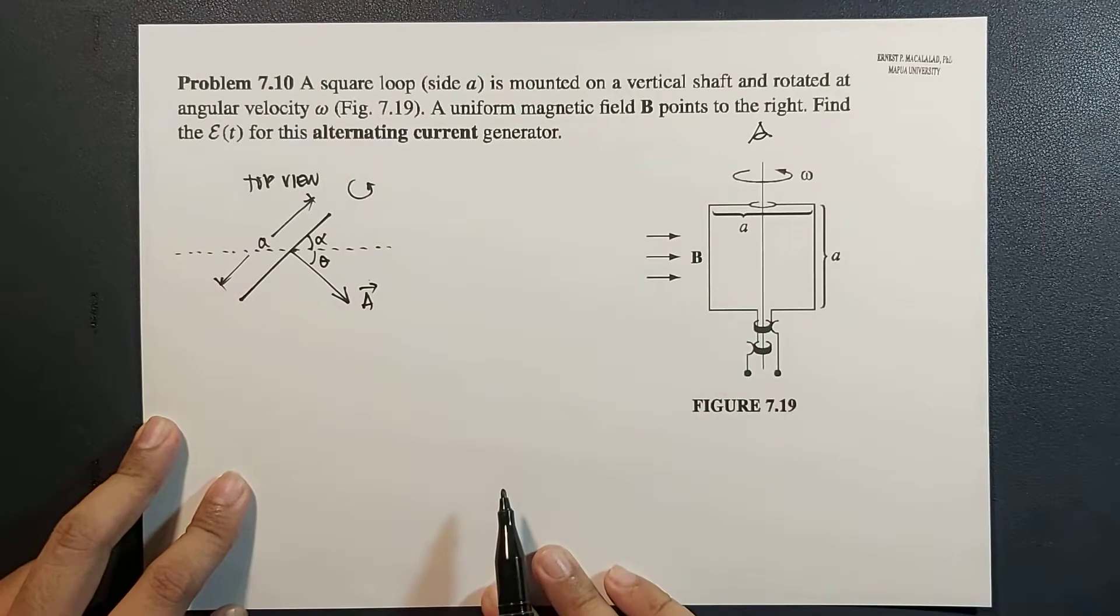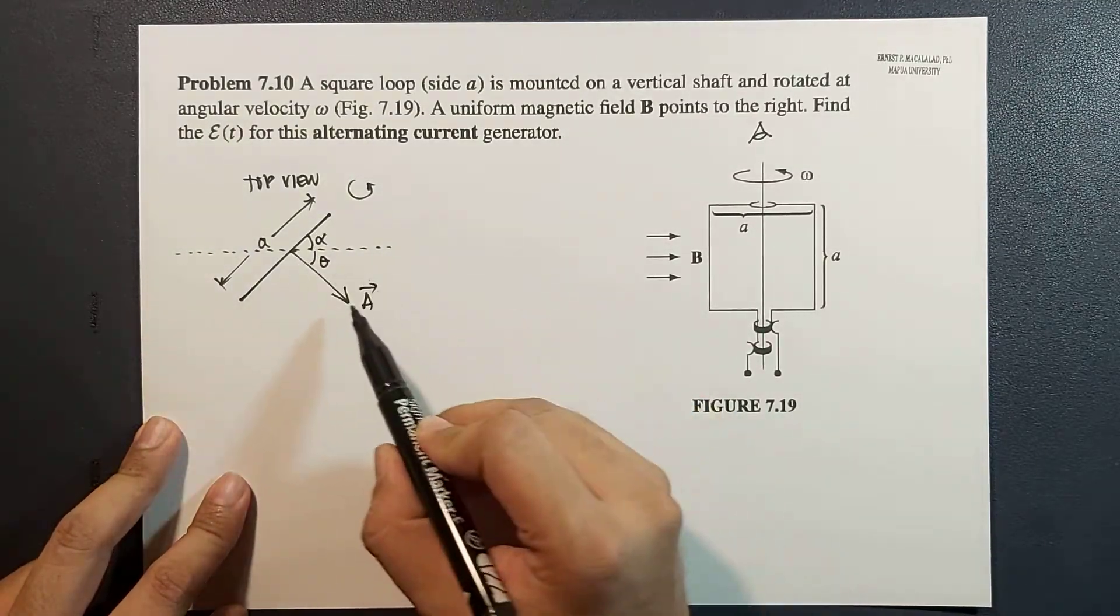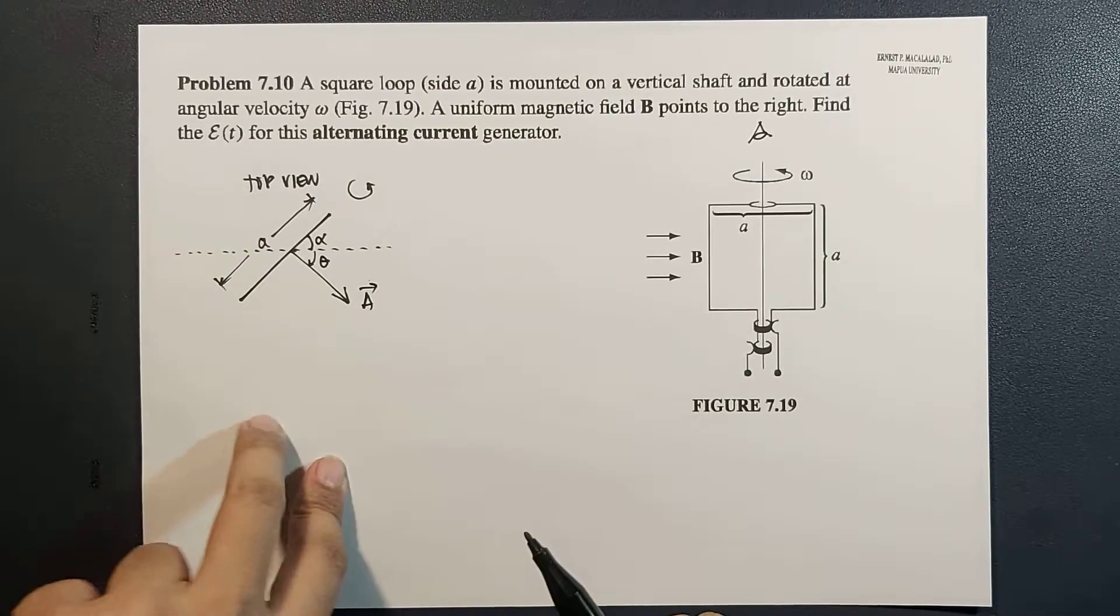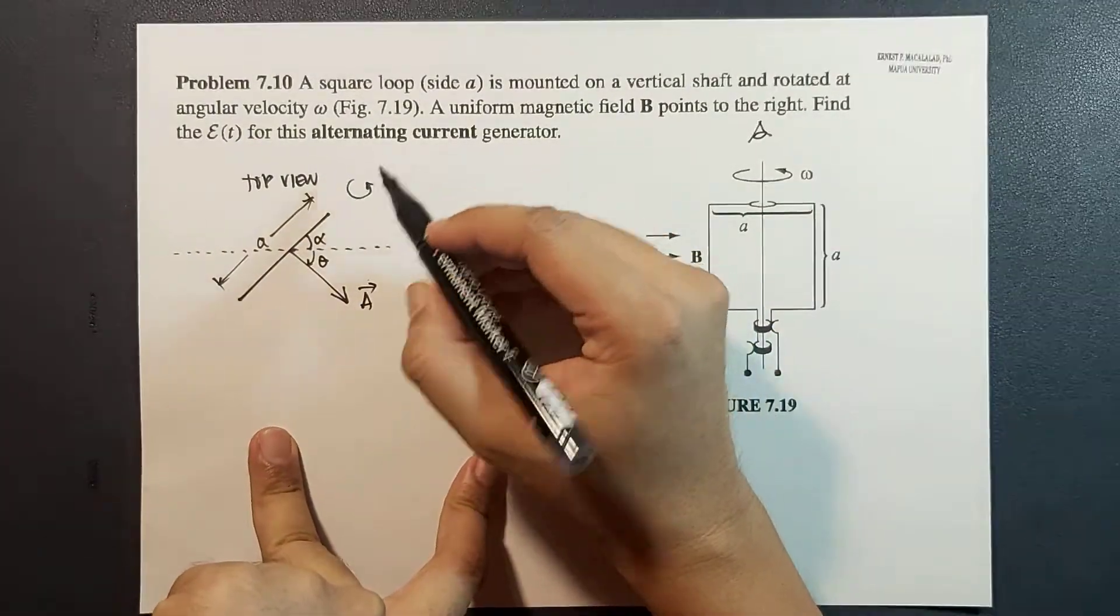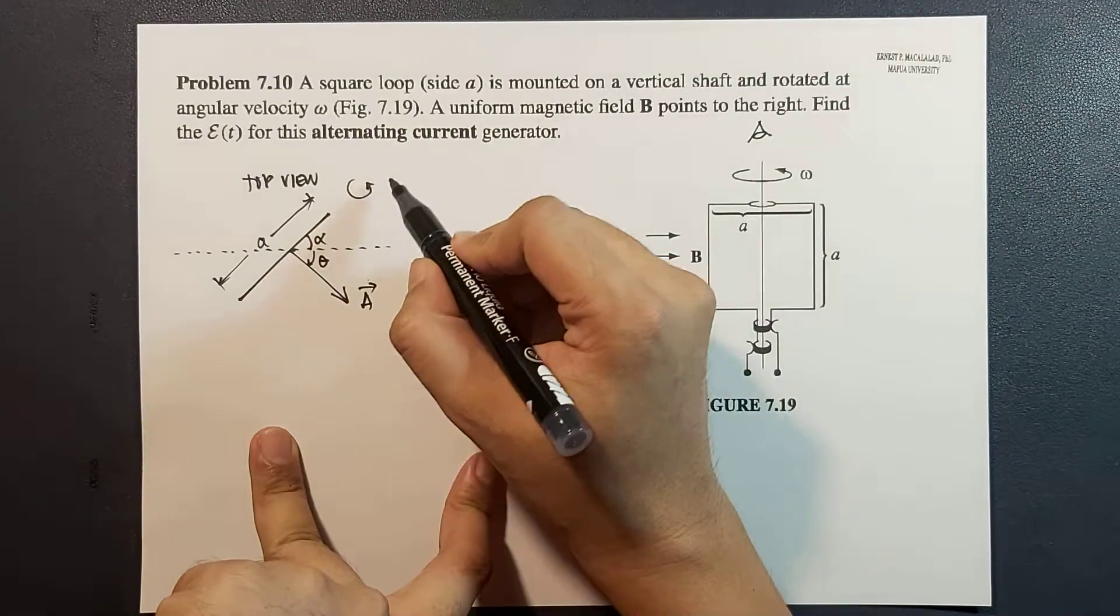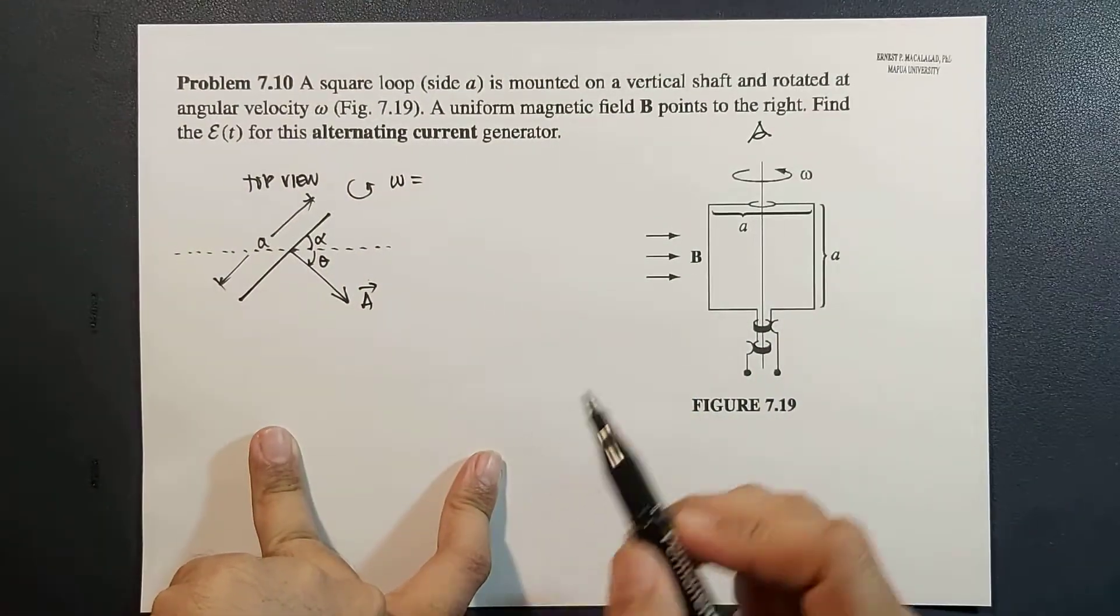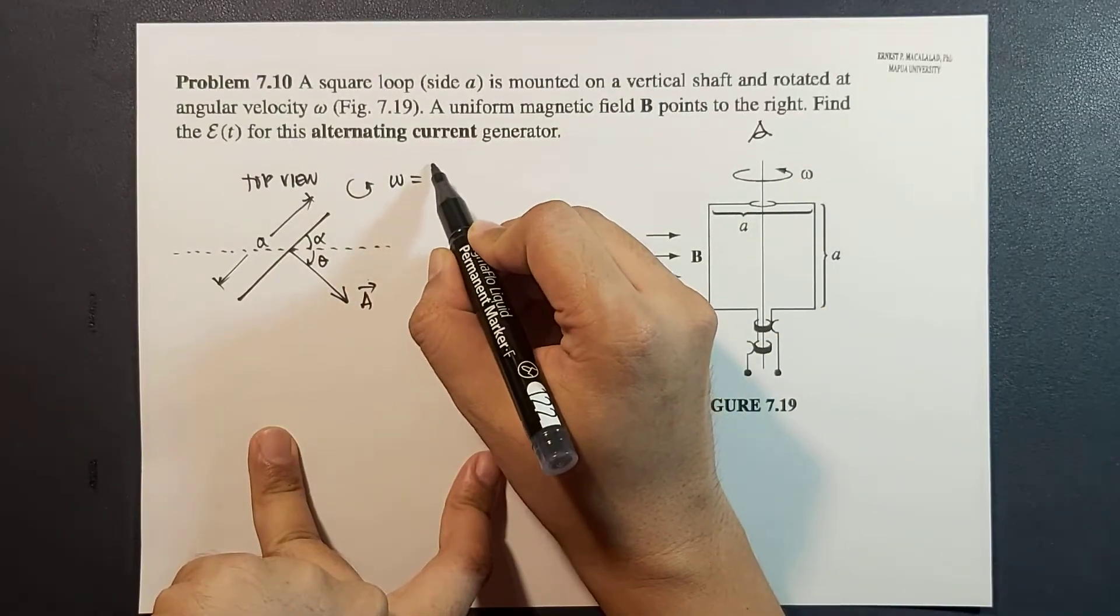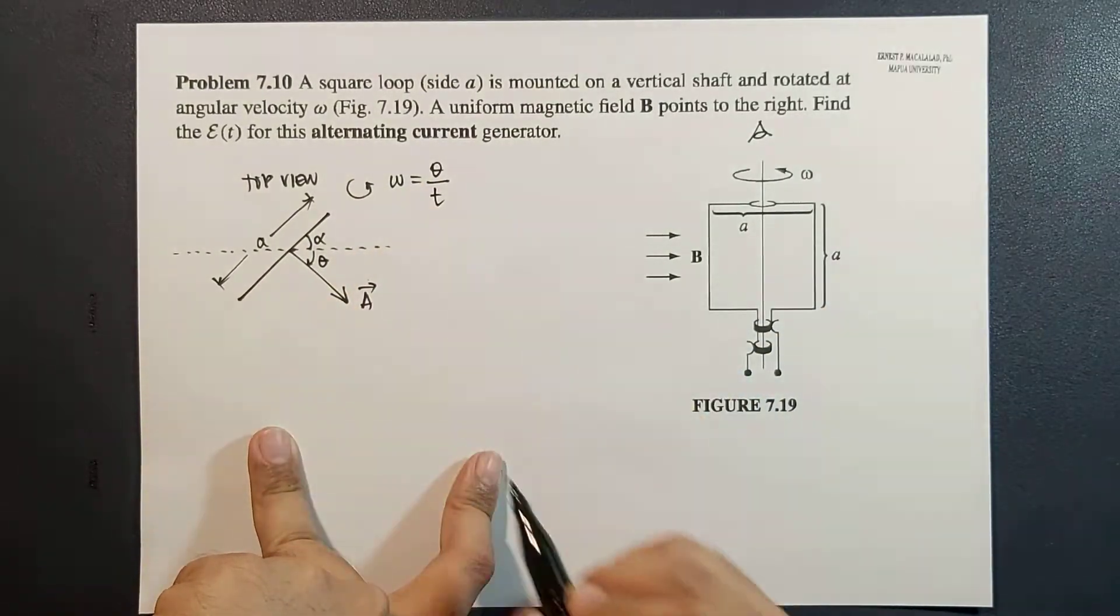So that means this area vector changes as a function of time, and that rate of change is a constant and that is equal to omega. So that means this is theta over t.